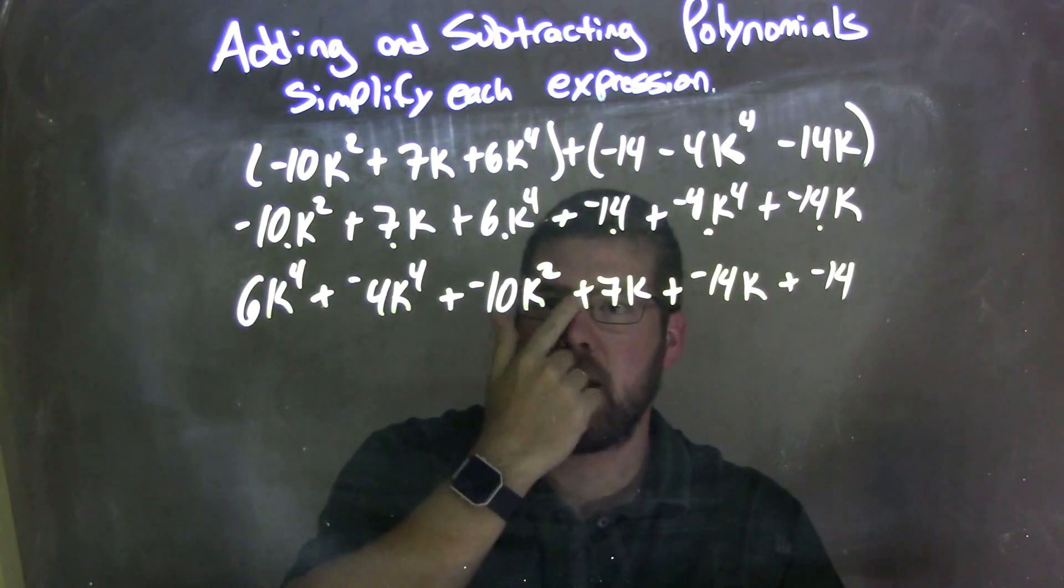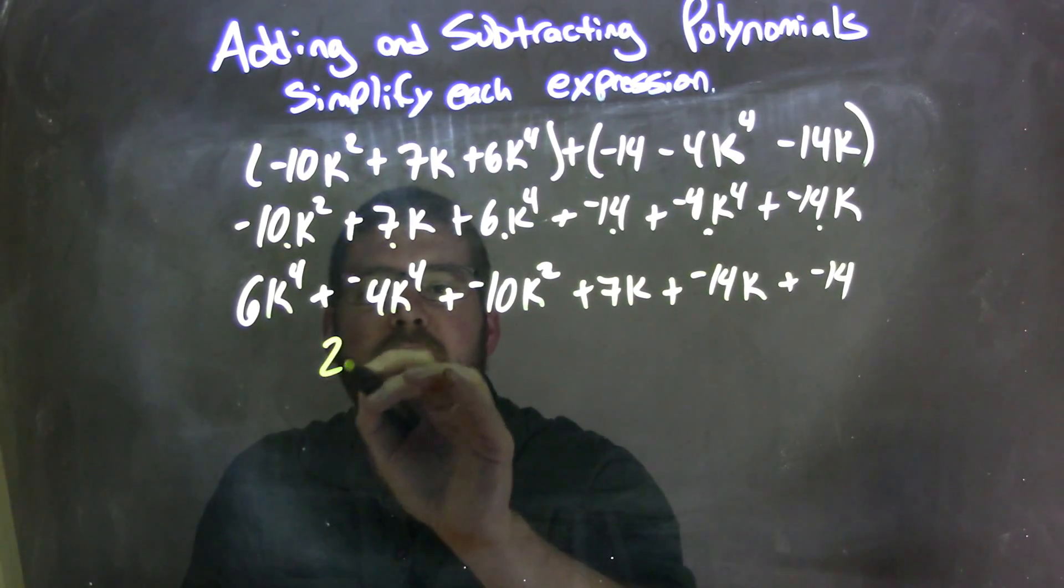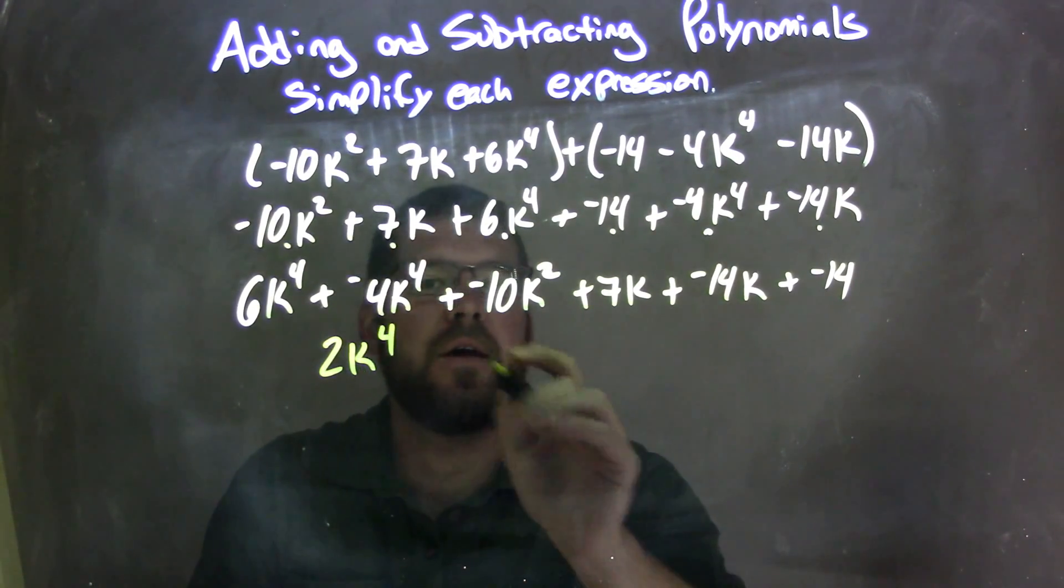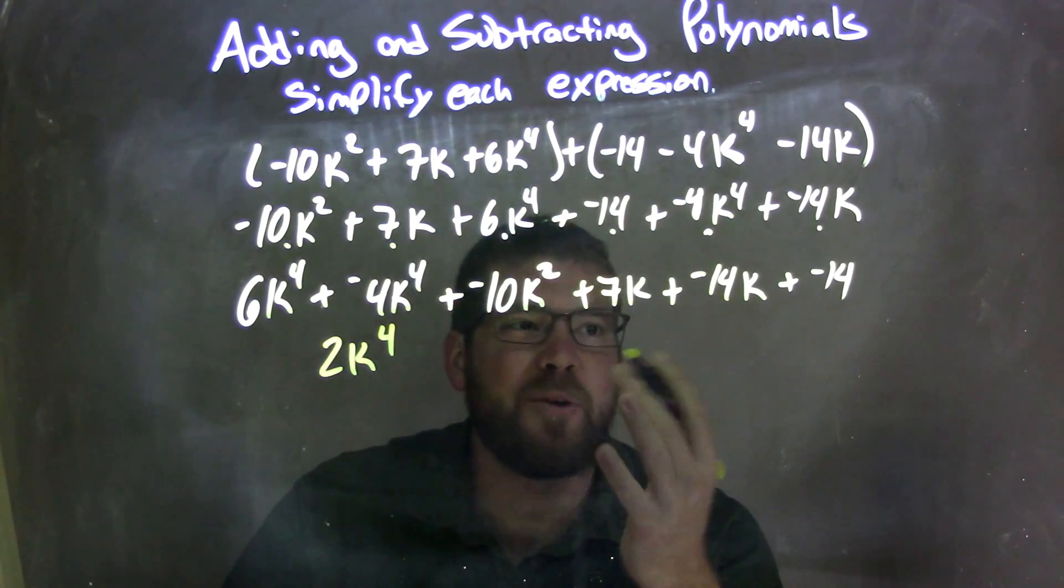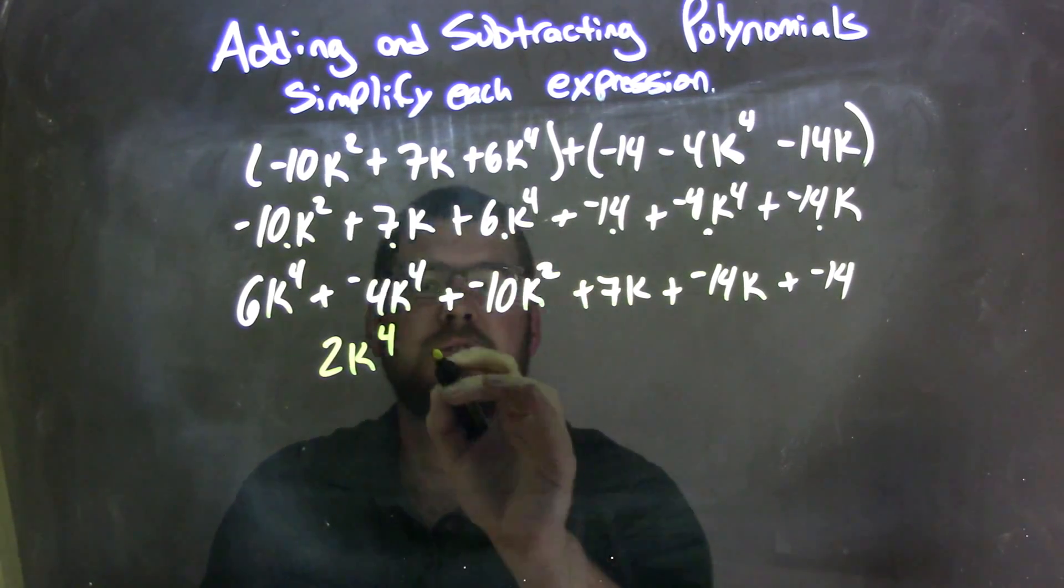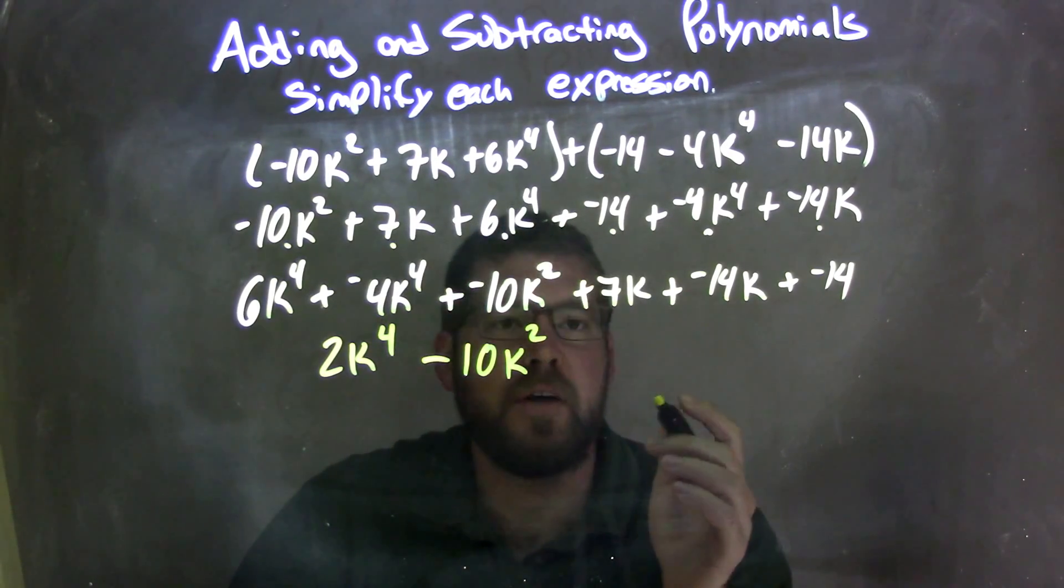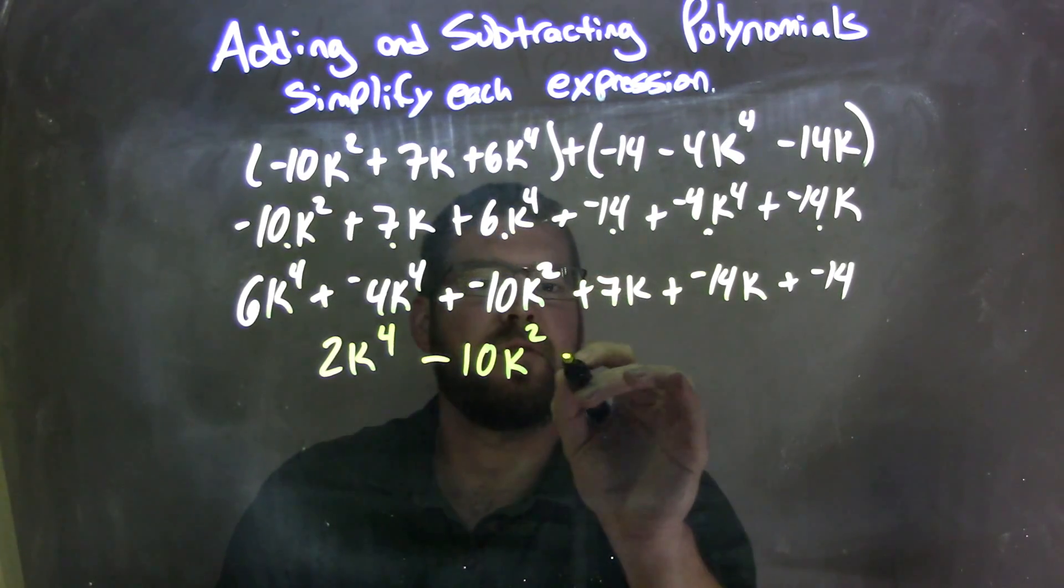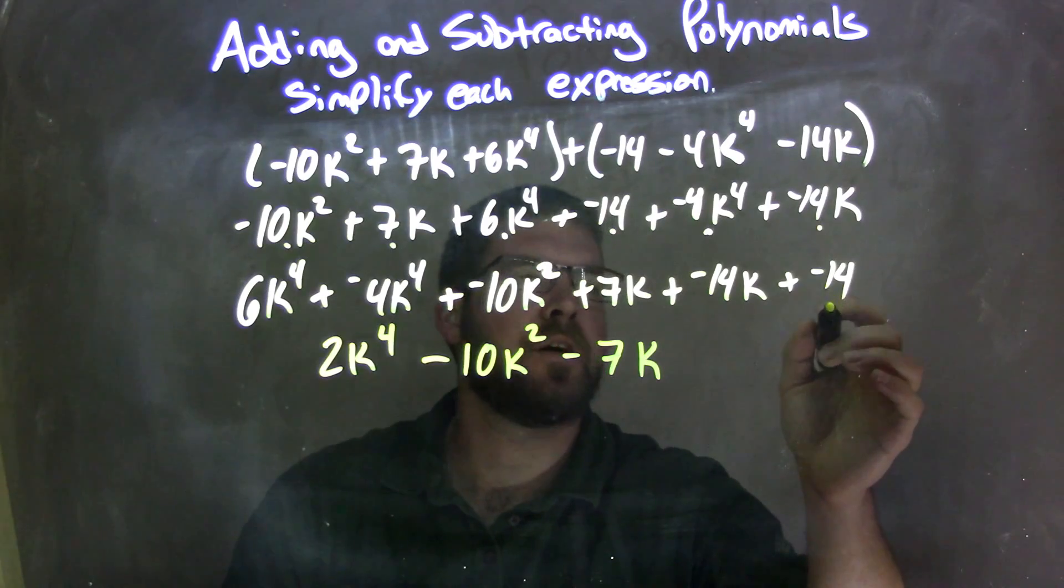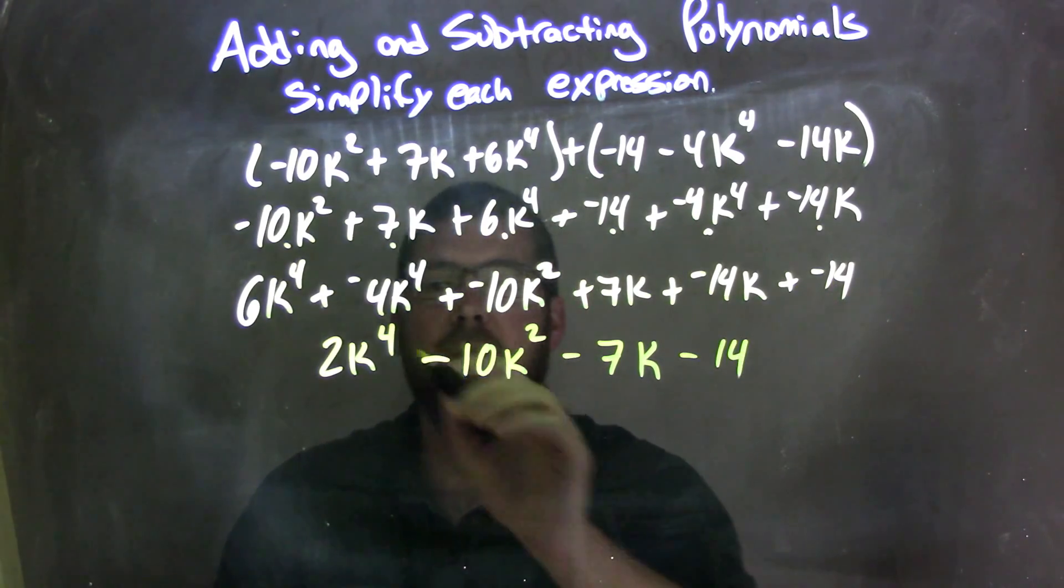Let's go combine our like terms and simplify this. So 6k to the fourth plus negative 4k to the fourth is just 2k to the fourth. Negative 10k squared doesn't combine with anything, so let's rewrite that to be subtraction. So we have subtracting 10k squared. Then from there 7k plus a negative 14k is a negative 7k, so let's go subtracting 7k as well. And then we have here adding a negative 14, this is subtracting 14, and there we go.